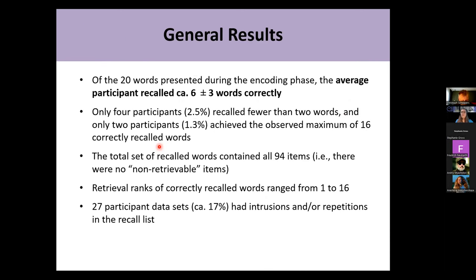Now some results. On average, out of 20 words presented during the encoding phase, participants recalled about six plus or minus three words correctly. That raises associations with Miller's magic number seven plus or minus two, which is well known in memory research, and our figures come close to that.